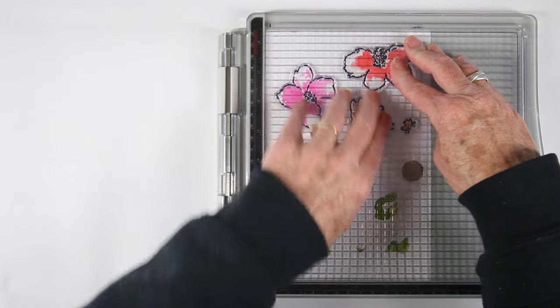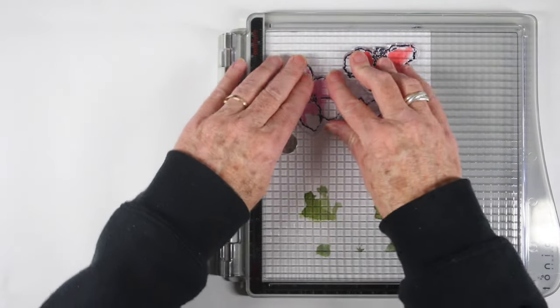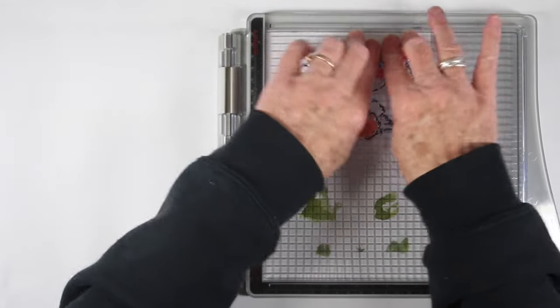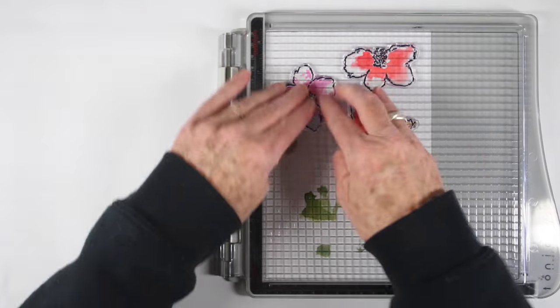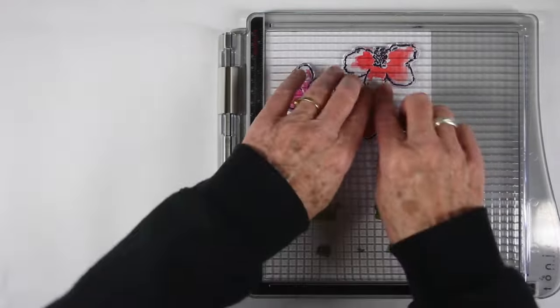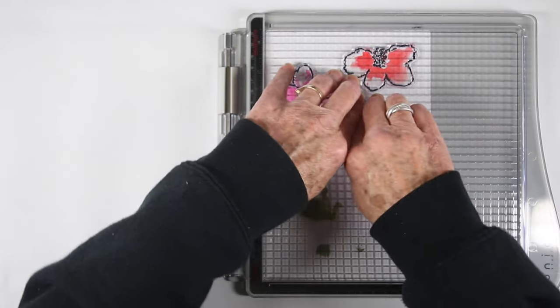I guess I should mention that I'm stamping onto the smooth side of my watercolor paper. But you could use the other side if you wish. And using the stamp positioner will allow you to get into all the little crevices. And you can do several times with your black ink as well to make sure that it gets really nice and dark.